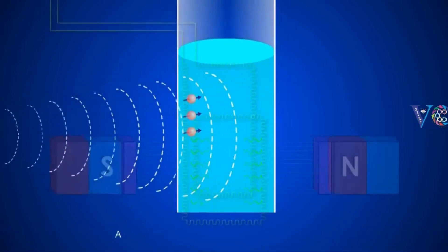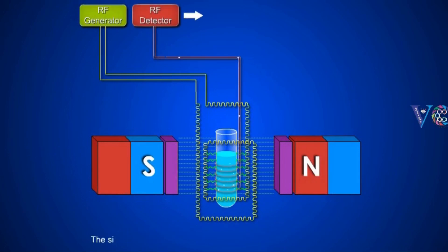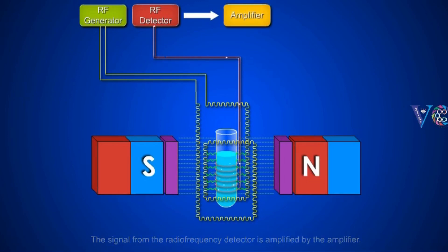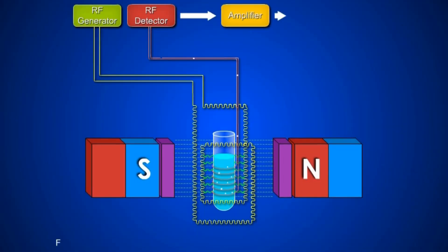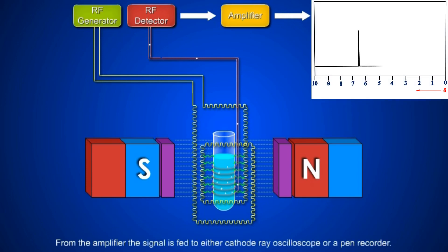A radio frequency detector detects the emitted radiation. The signal from the radio frequency detector is amplified by the amplifier, and then fed to either a cathode ray oscilloscope or a pen recorder.